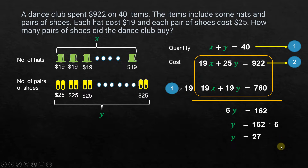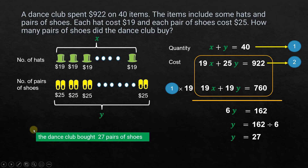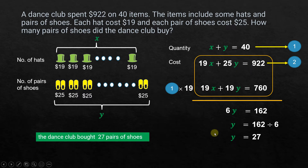Solving for Y: Y equals 162 divided by 6, which gives Y = 27. Since Y represents the number of pairs of shoes, the answer is that the dance club bought 27 pairs of shoes. I drew this diagram to make it easy to convert the word problem into equations and then solve them.